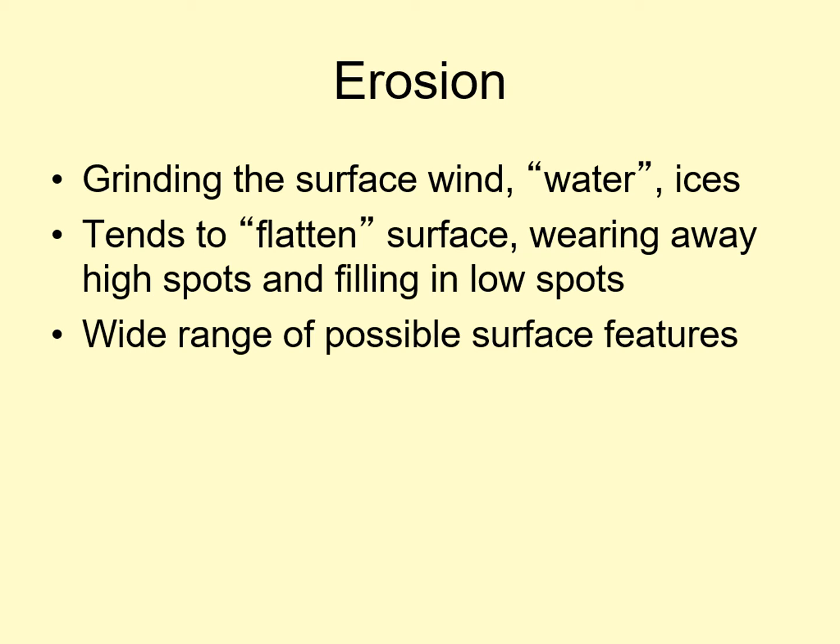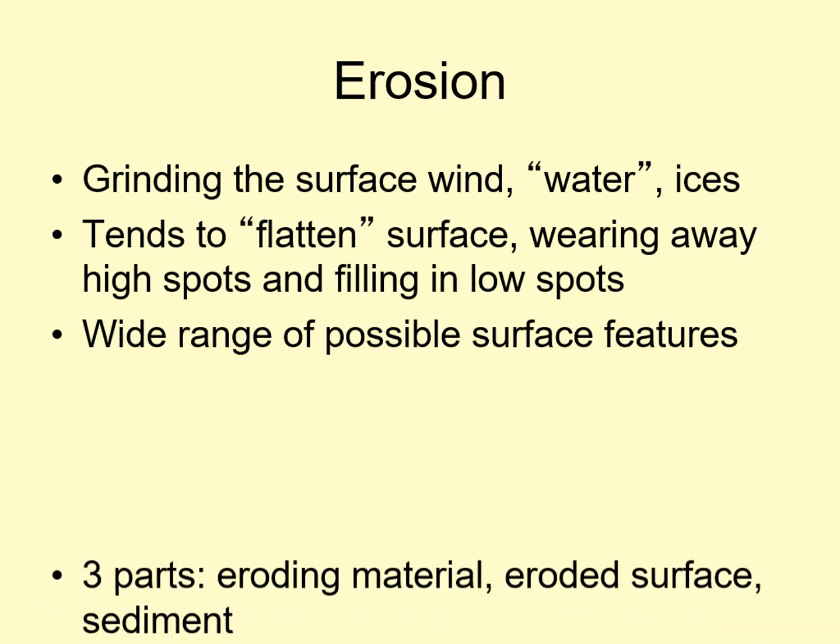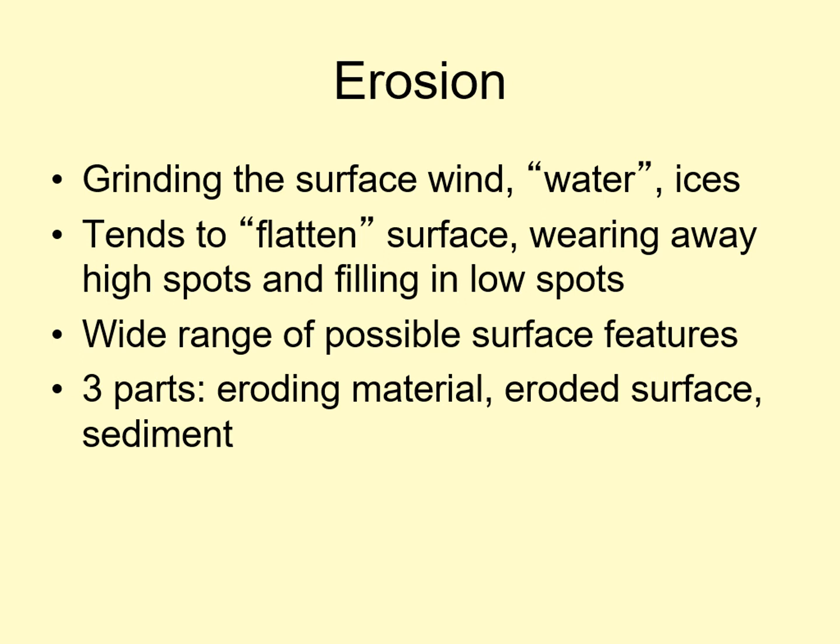The catalog of possible features is much too long to go through in this course. However, we can look for the three main components to an eroding system. There's the eroding material, such as flowing water or wind. There's the eroded surface — the surface that's been cut away by erosion, such as a river valley or a glacier-cut mountainside. Finally, there's the sediment, the debris that's been eroded away.